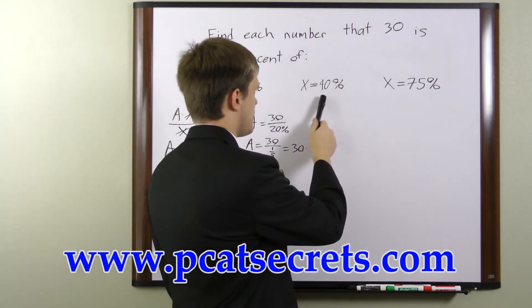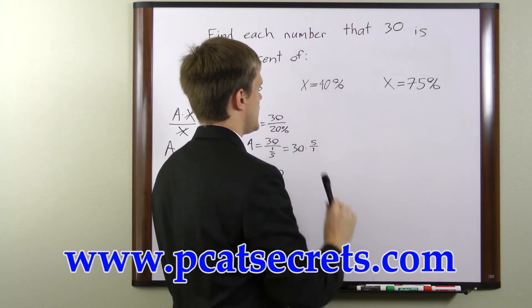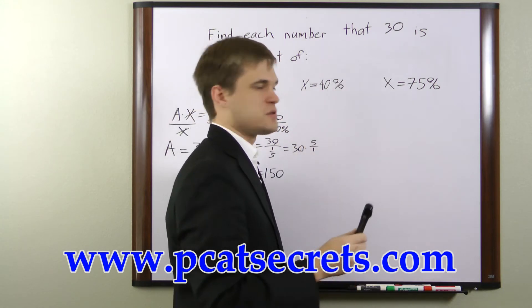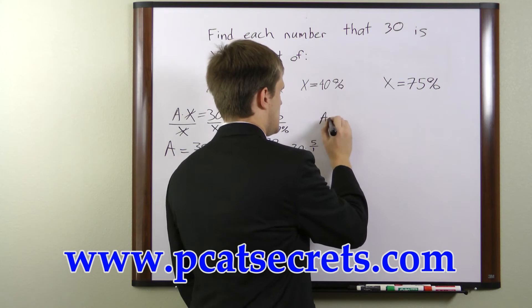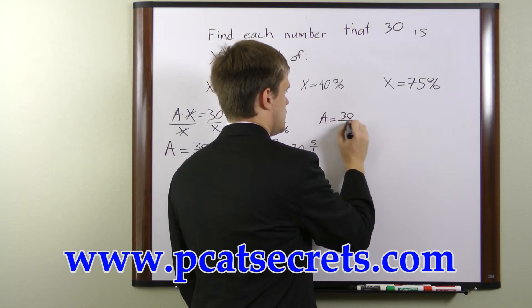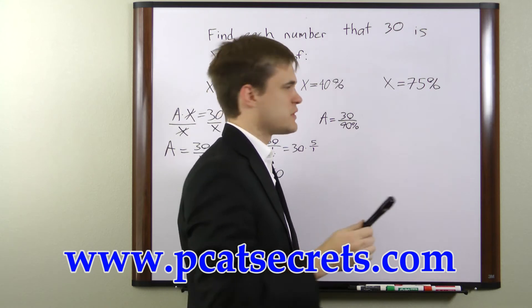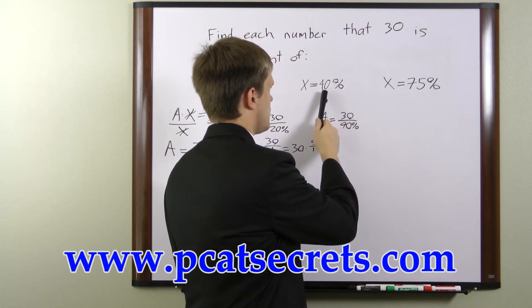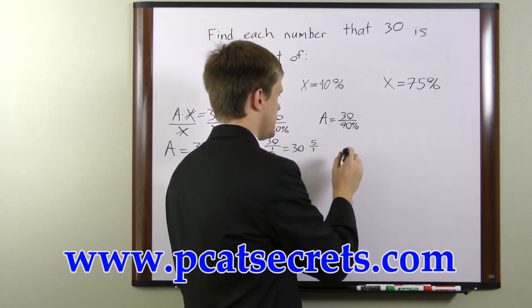In the next example, we have a value of x as 40 percent. So we can write a equals 30 over 40 percent. Once again, we're going to convert this to a fraction. 40 percent is the same as 2 fifths.